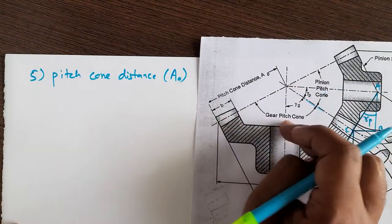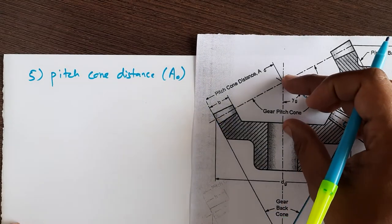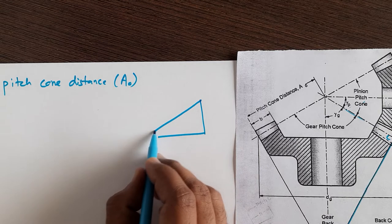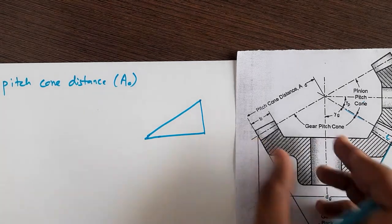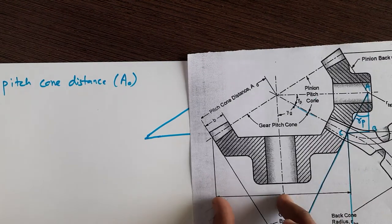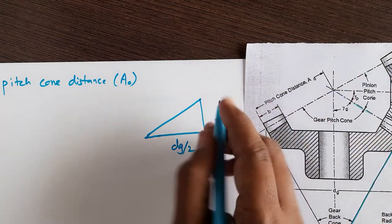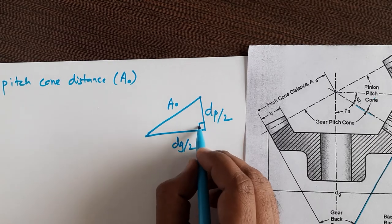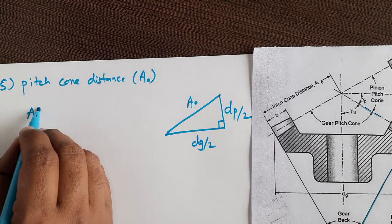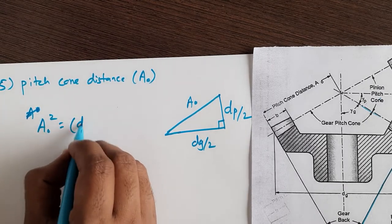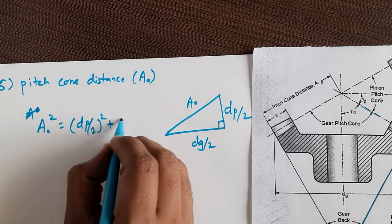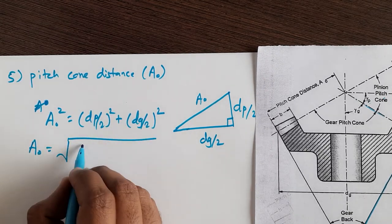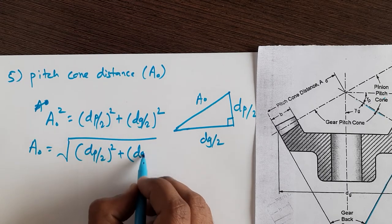If you consider this triangle, this distance will be dg by 2 and this distance will be dp by 2. So by Pythagoras theorem, A0 squared is equal to (dp/2) squared plus (dg/2) squared, or A0 is equal to the square root of (dp/2) squared plus (dg/2) squared.